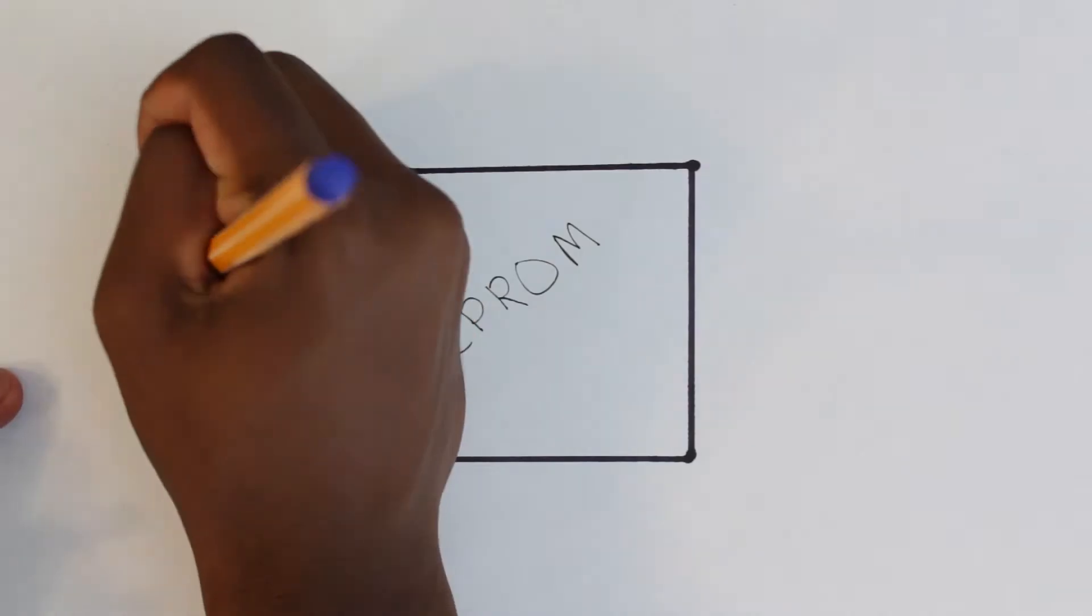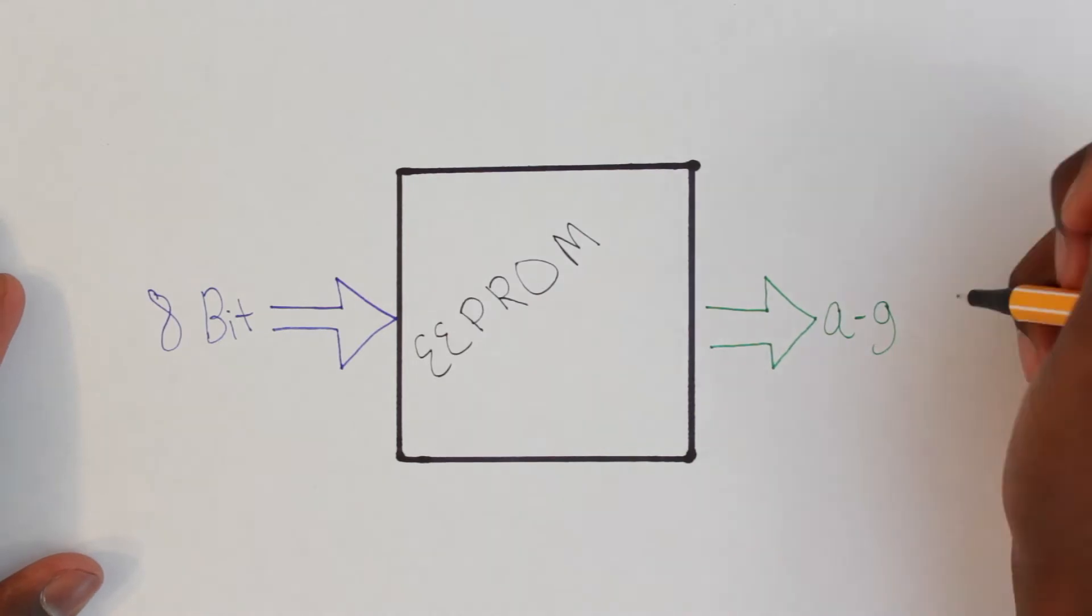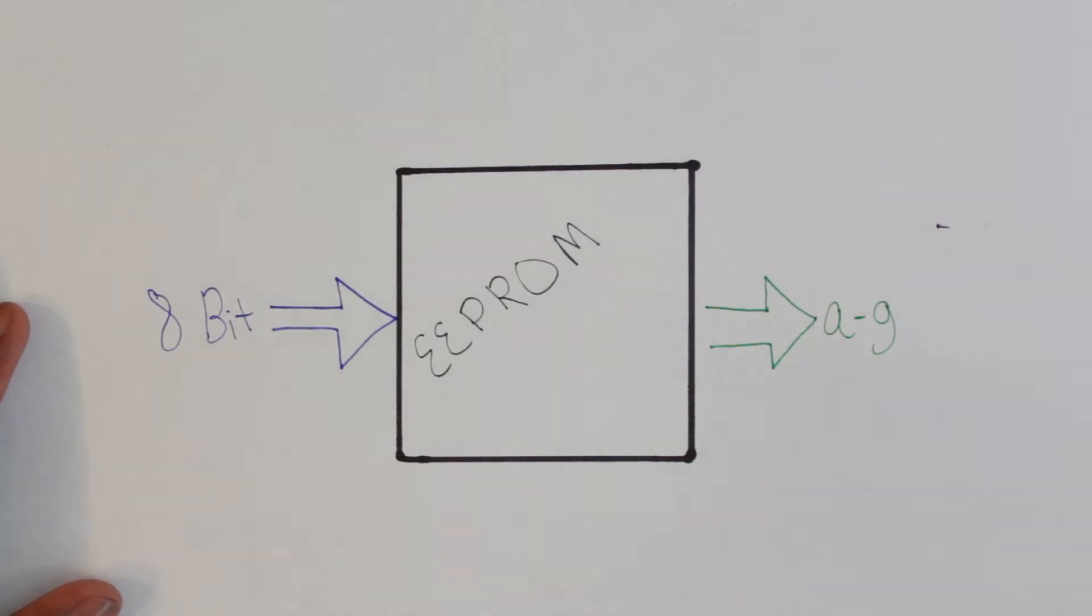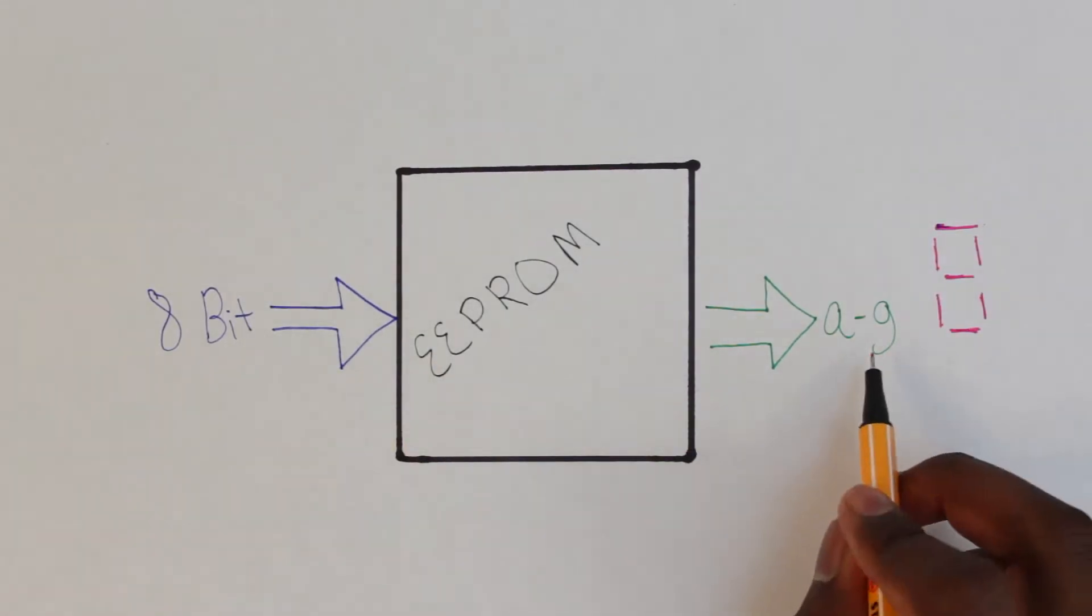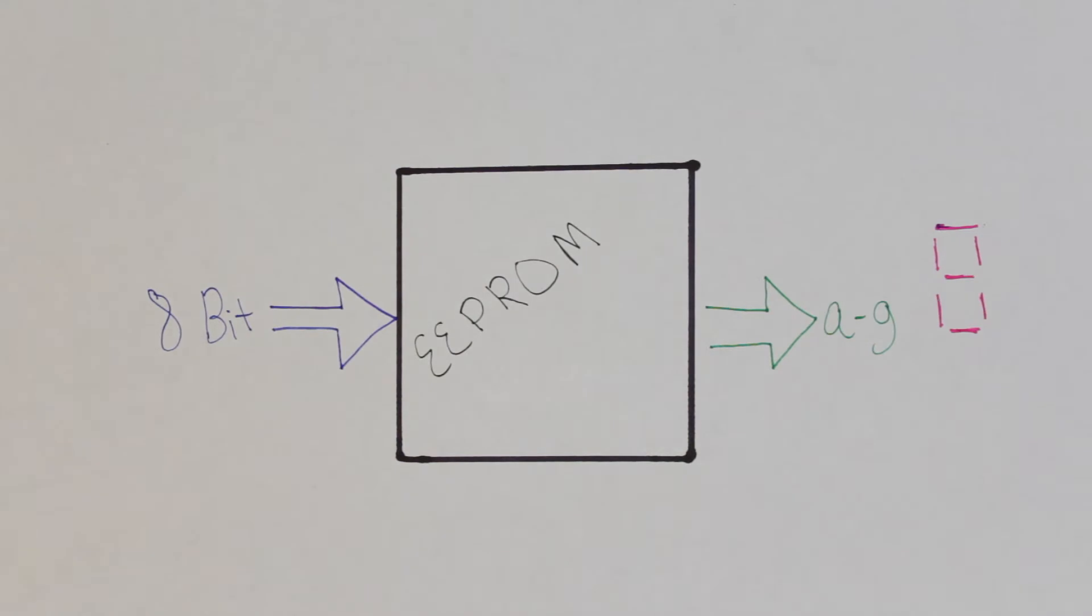The way we're going to use this is that we're going to have our 8-bit binary value come into the EEPROM as the address. Then we'll have the EEPROM output represent the values A to G that will direct our seven-segment display.